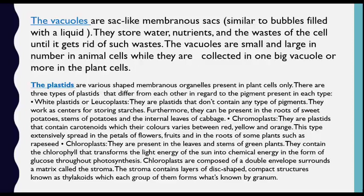The third kind is chloroplasts — the green plastids. They are present in the leaves and stems of green plants. They contain chlorophyll, which transforms the light energy of the sun into chemical energy in the form of glucose throughout photosynthesis.